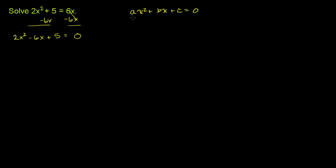The quadratic formula tells us that if we have something in standard form, the roots are going to be negative b plus or minus the square root of b squared minus 4ac, all over 2a — giving us two roots.